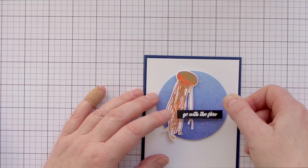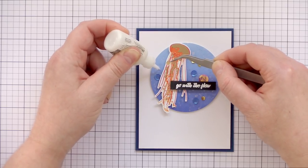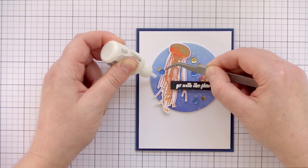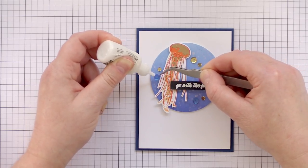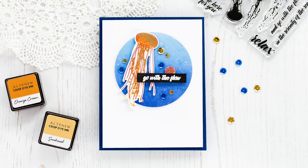I wanted to keep this card nice and clean and simple with lots of white space, but I did think a few sequins would add a nice touch. I adhered these with Ranger Multi-Medium Matte. And that completes this card with multi-layered and heat embossed jellyfish floating in a deep blue sparkly sea.